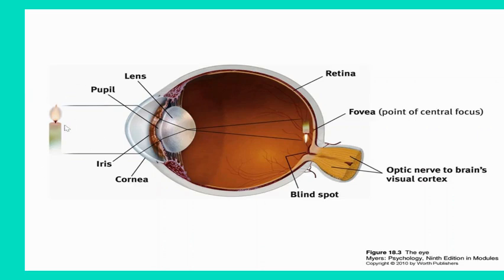Light waves directly enter into the pupil. The pupil is that dark black dot that you have on your eye, and that pupil is controlled by that colored ring, which is actually a muscle. The colored ring or muscle is called the iris. That iris constricts and dilates your pupils depending on the light in the room — if it's dark, the pupils are going to get larger and dilate; if it's bright, the pupil is going to constrict and be smaller.